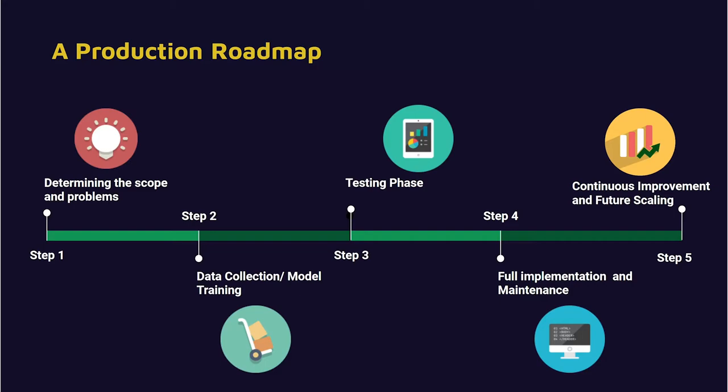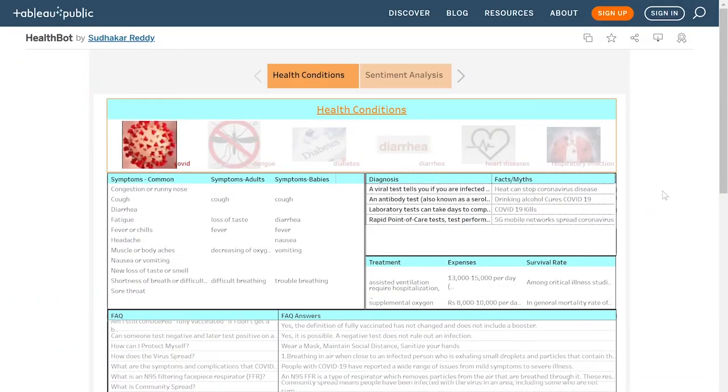A production roadmap would look something like this: the first step is determining the scope and problem for a particular clinic or hospital, then collecting relevant data and training the model. After an initial testing phase, we identify areas for improvement and make relevant changes, followed by full implementation. The final step focuses on continuous improvement and future scaling.